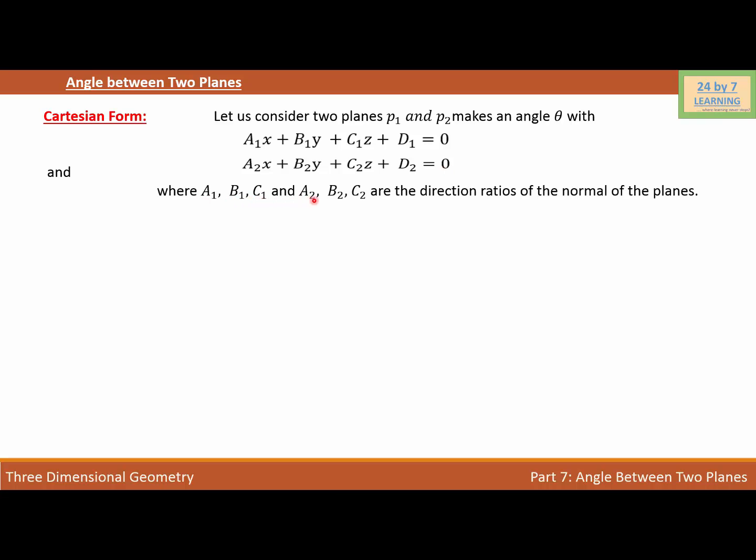Where A1, B1, C1 and A2, B2, C2 are the direction ratios of the normal of the plane. Then, the angle theta between the planes is given as cosine theta is equal to absolute value or mod A1A2 plus B1B2 plus C1C2 over square root of A1 square plus B1 square plus C1 square times square root of A2 square plus B2 square plus C2 square.